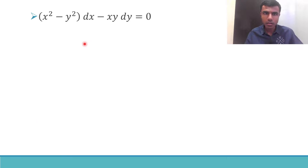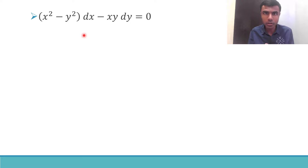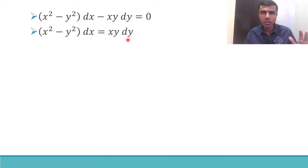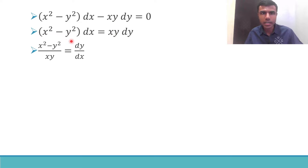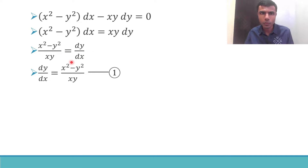I want to write this as something of the form dy/dx equals something. For that, this minus xy dy term — just take it to the RHS, so this would be plus xy dy. Now I want dy/dx, so send dx to the RHS and xy to the LHS. So dy/dx is equal to x² minus y² divided by xy. Mark it as equation one.